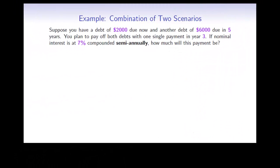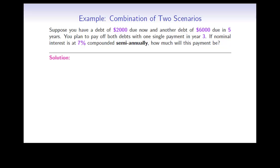Here is an example combining two scenarios. Suppose you have a debt of $2,000 due now and another debt of $6,000 due in 5 years. You plan to pay off both debts with one single payment in year 3. If nominal interest is 7% compounded semiannually, how much will this payment be? We start by drawing a timeline using year 3 as our reference year.